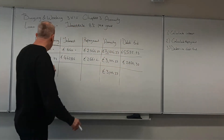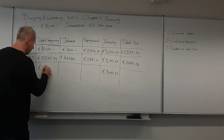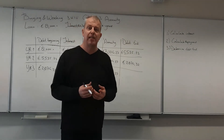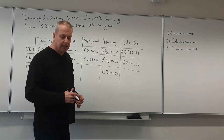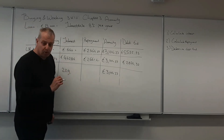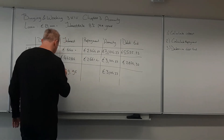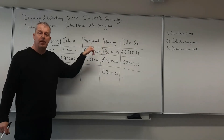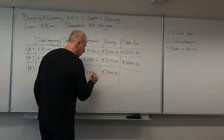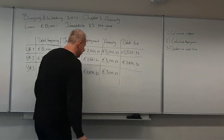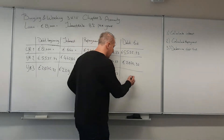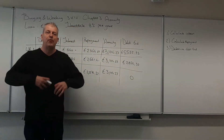We transfer that to year 3: 2,874.32 euros. Step one again: 8% multiplied by the debt at the beginning of the year gives us 229.95. Then determine the repayment: the annuity minus the interest gives us 2,874.32 euros — which is exactly the debt at the beginning of the year. So the debt at the end of the year is zero, meaning we have fully repaid our loan.